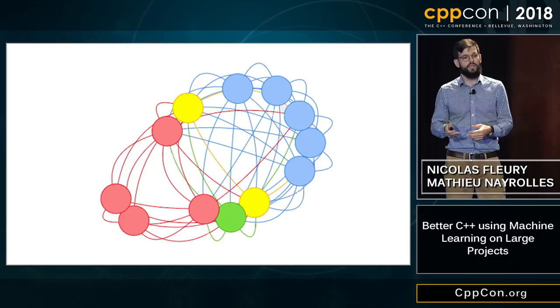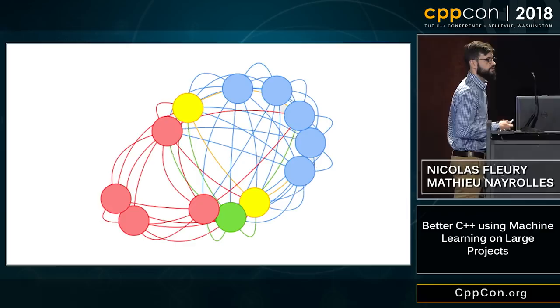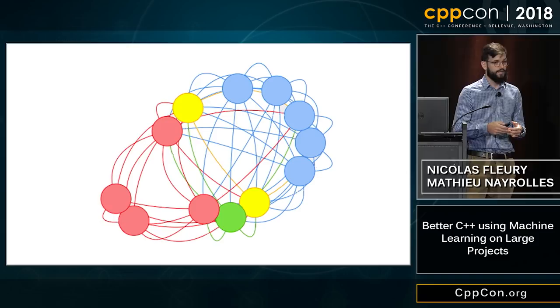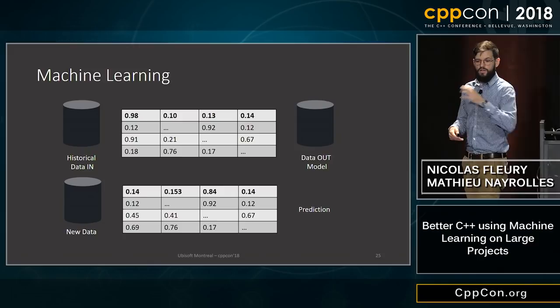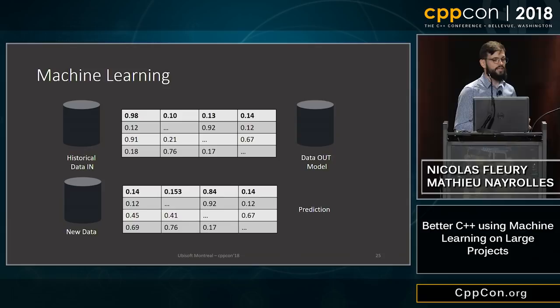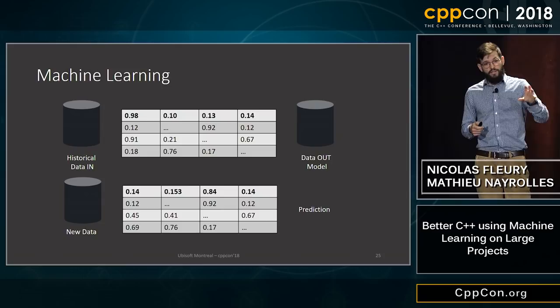To compute that likelihood of a contribution to introduce a defect, we use machine learning. The gift of machine learning is that you have a lot of historical numerical data and you try to model it using machine learning techniques. When you have new, unseen data, you can try to make a prediction about it.